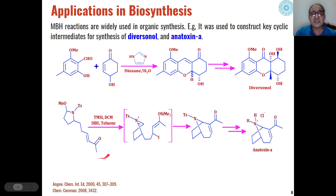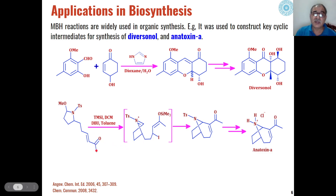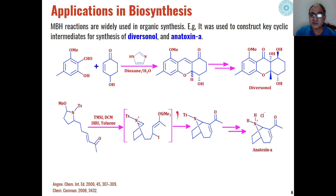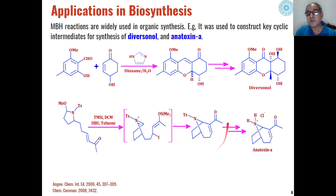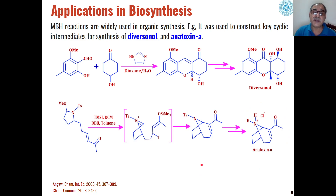Similarly, alpha-beta unsaturated ketones in the presence of a catalyst base can be used for an intramolecular reaction. First, this will react with trimethylsilyl iodide to give enol intermediates where oxygen forms an oxytrimethylsilane. These intermediates can then be converted into an anthocyl ketone through the Baylis-Hillman reaction, and this anthocyl ketone can be converted through different reactions into anthocyl A, which is again a natural product biosynthesized via the Baylis-Hillman reaction.